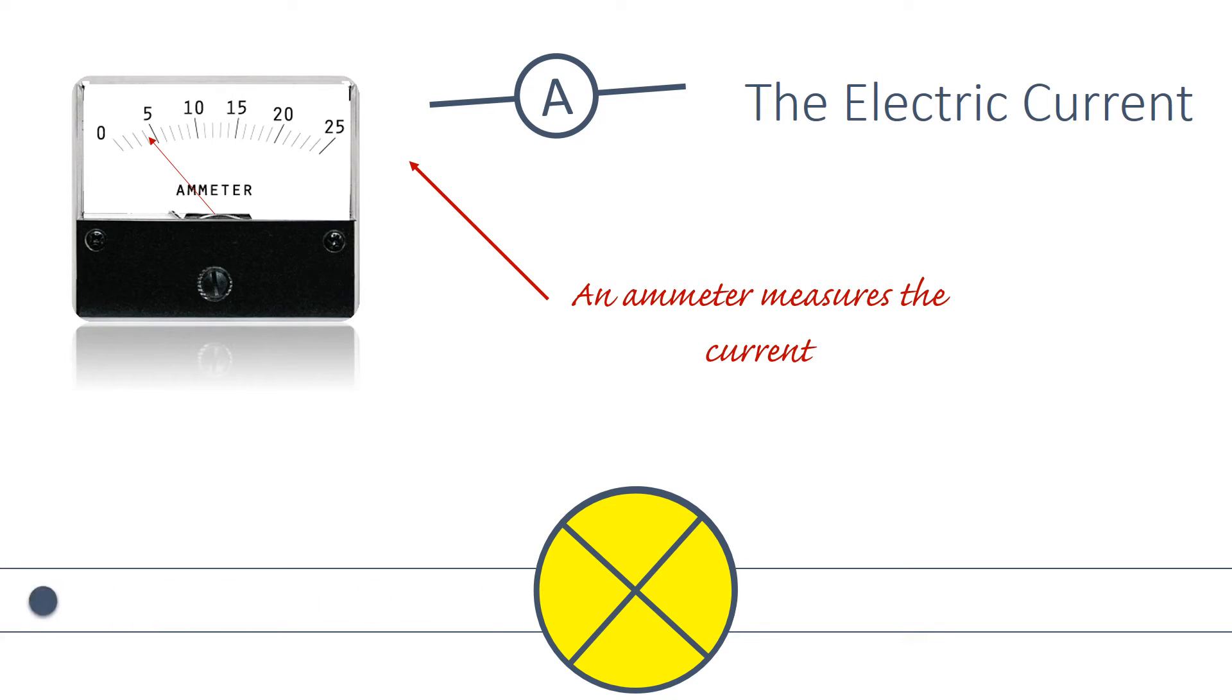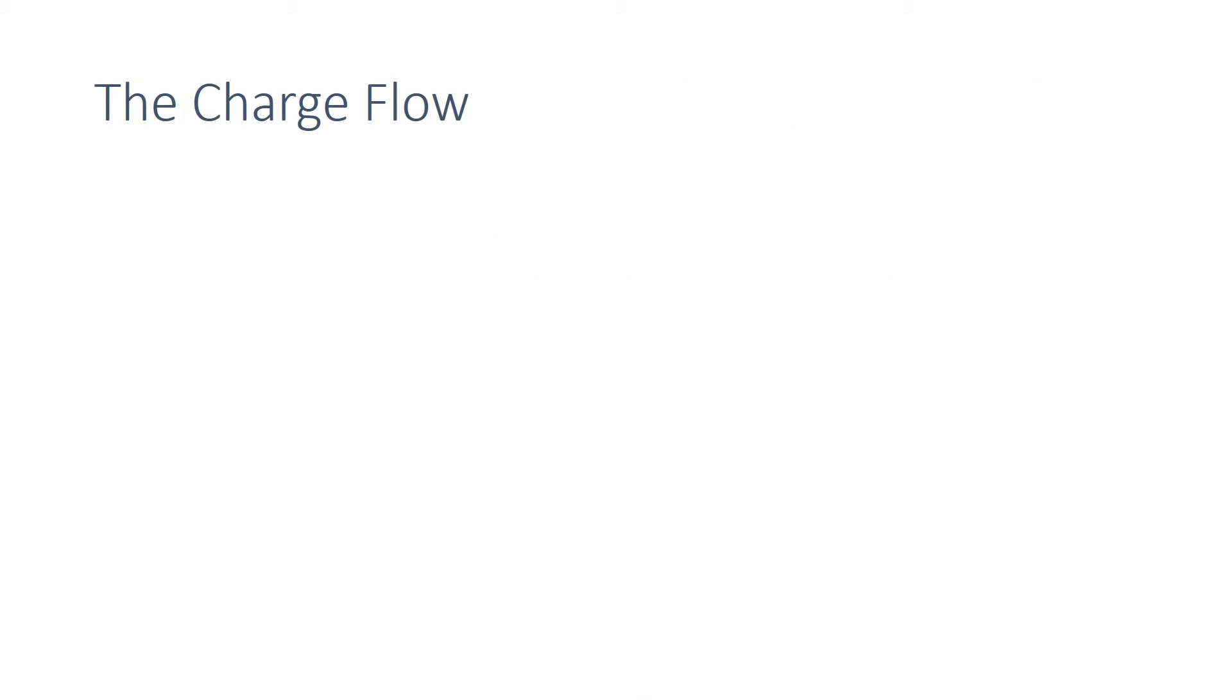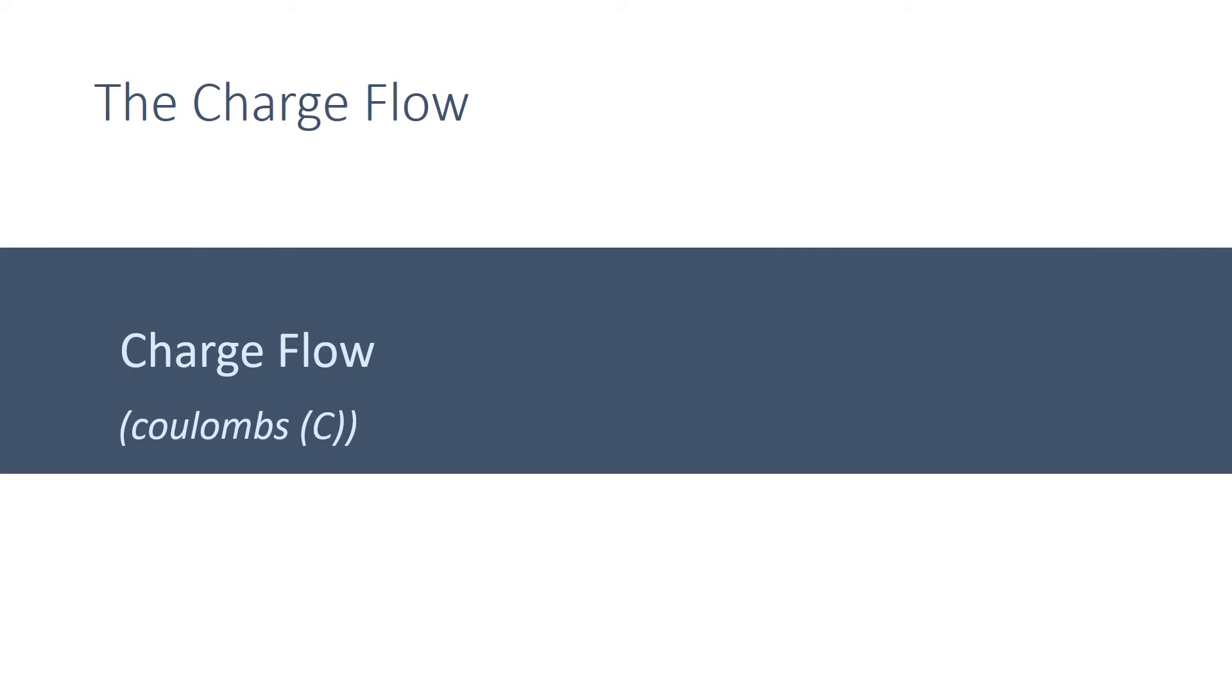The greater the number of electrons moving through a component each second, the greater the current passing through it. The charge flow is measured in coulombs and is a combination of both the current flowing in a circuit and the time taken, and it can be worked out using this equation which you need to learn.